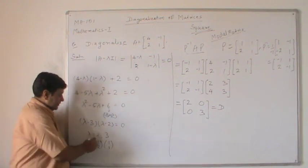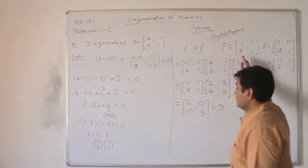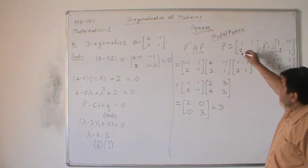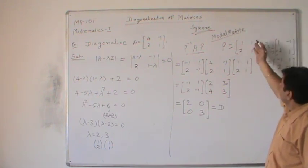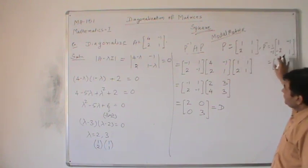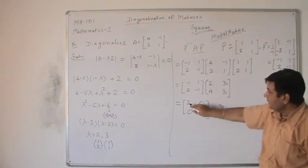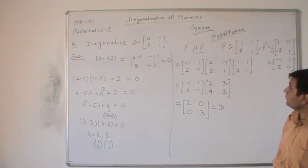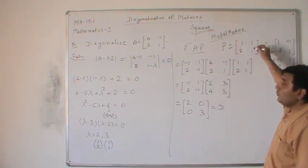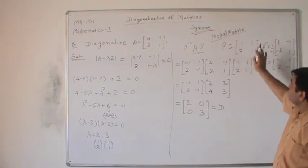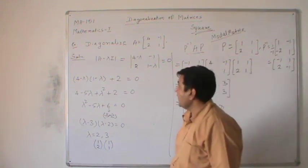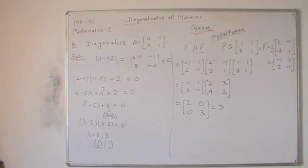You can observe that the diagonal matrix has eigenvalues on the principal diagonal which were calculated previously. Further, if you change the order of the eigenvectors while constructing the modal matrix — for instance, placing [1,1] first and [1,2] second — the diagonalization process will still succeed, but eigenvalue 3 will appear at position (1,1) and eigenvalue 2 at position (2,2). Changing the order of eigenvectors does not affect the diagonalization process.